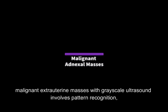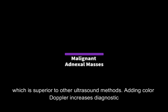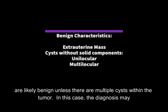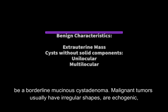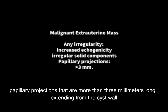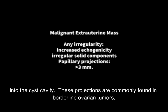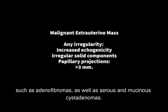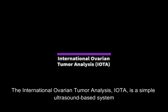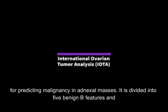Distinguishing between benign and malignant extra-uterine masses with grayscale ultrasound involves pattern recognition, which is superior to other ultrasound methods. Adding color Doppler increases diagnostic accuracy and confidence. Cysts without solid components, either unilocular or multilocular, are likely benign unless there are multiple cysts within the tumor, in which case the diagnosis may be a borderline mucinous cystadenoma. Malignant tumors usually have irregular shapes, are echogenic, and have extensive and jagged solid components. A key indicator of malignancy is the presence of papillary projections more than 3 mm long extending from the cyst wall into the cyst cavity. The International Ovarian Tumor Analysis (IOTA) is a simple ultrasound-based system for predicting malignancy in adnexal masses.